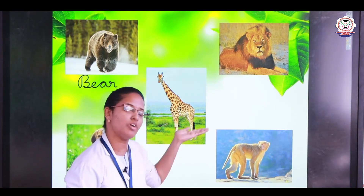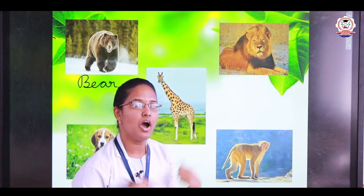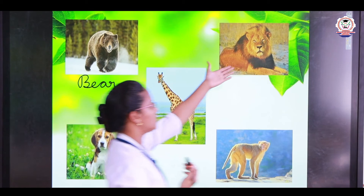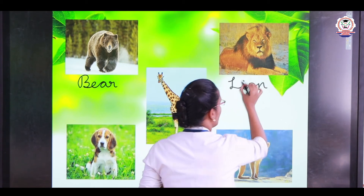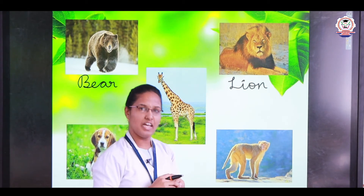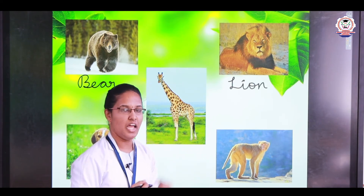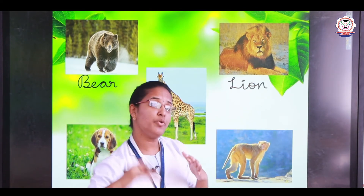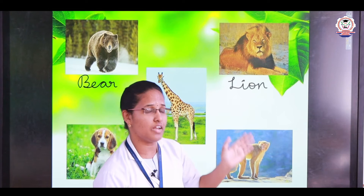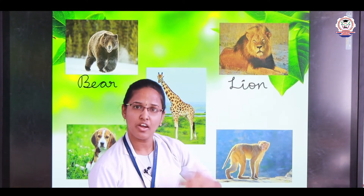Domestic or pet animals we used to keep in our homes and surroundings. The next animal is lion — L-I-O-N. Lion is the king of the forest. Only female lions play the major part in hunting other animals. We can hear the roar of a lion up to 8 kilometers away.